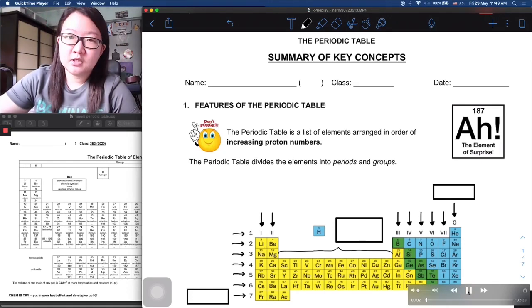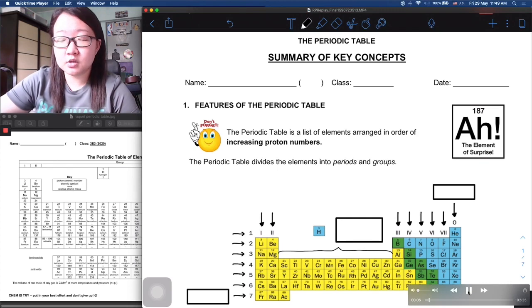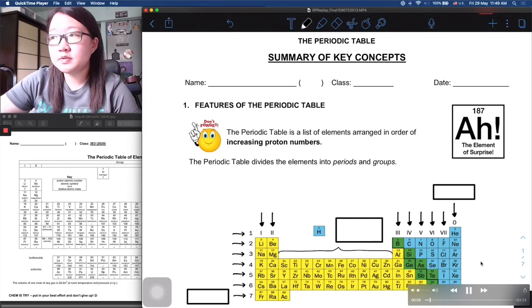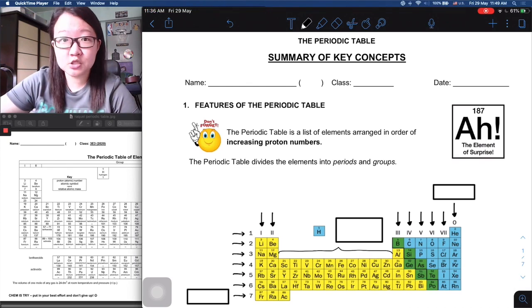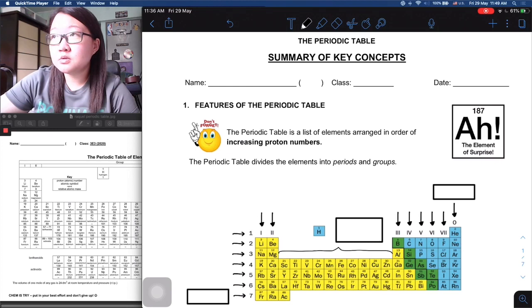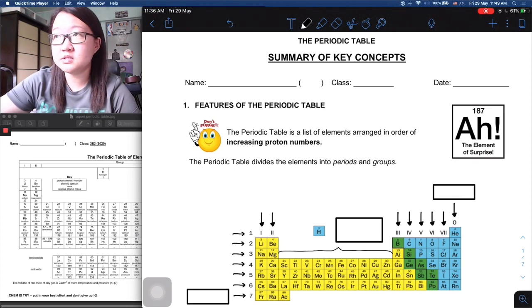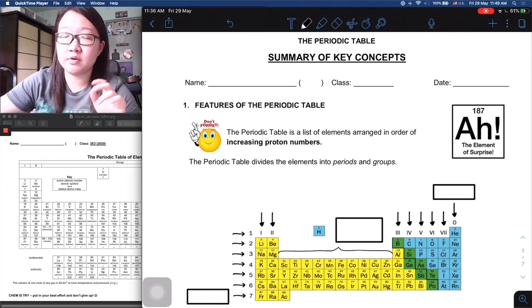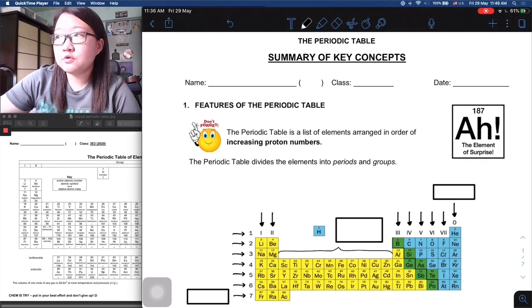Hi students, in today's lesson we will be going through our next chapter which is on the periodic table. This particular chapter we have seen in bits and pieces so far in atomic structure as well as a bit of chemical bonding. After this chapter, this will really help us wrap up our understanding and see how it links together.